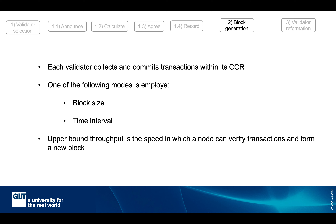Once CCRs are distributed, each validator collects transactions falling within its CCR and commits them into the blockchain without needing to follow any other algorithm, making the process very fast. The upper-bound throughput is the speed at which nodes can verify a transaction and form a new block — essentially just creating and signing a hash — so Tree-Chain can achieve very high transaction throughput. Block generation can be triggered either by reaching a block size threshold or by particular time intervals, depending on network settings.